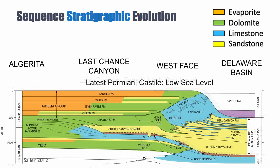At the end of deposition of the Guadalupian carbonates, we have evidence for increased evaporation, probably because of increased isolation of the basin, and deposition of the Castile formation — an evaporite deposited not just in the salinas on the platform, but also in the basin. This fills the whole system with an evaporative layer, which is like an ideal top seal.